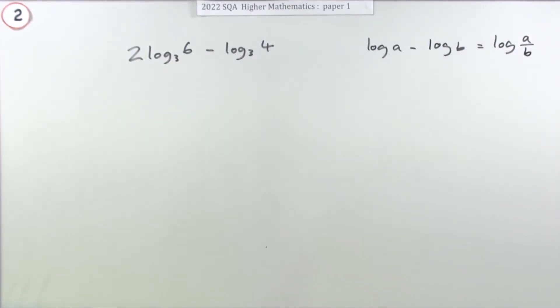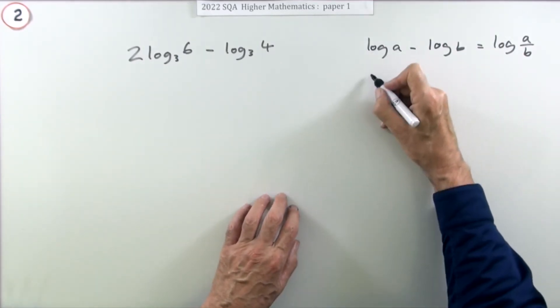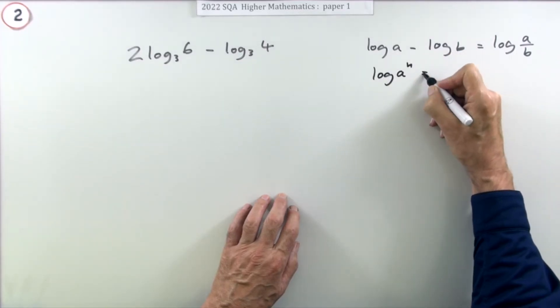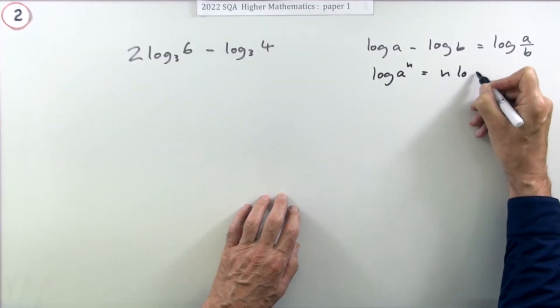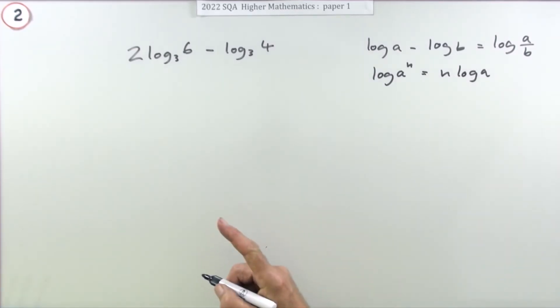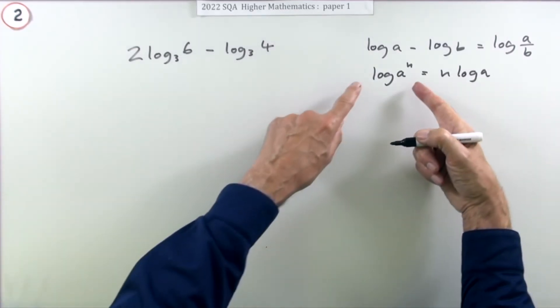The other law you'll be using is this: if you've got log a to some power, that's the same as n times log a. For the last part, you're just going to use what log actually means.